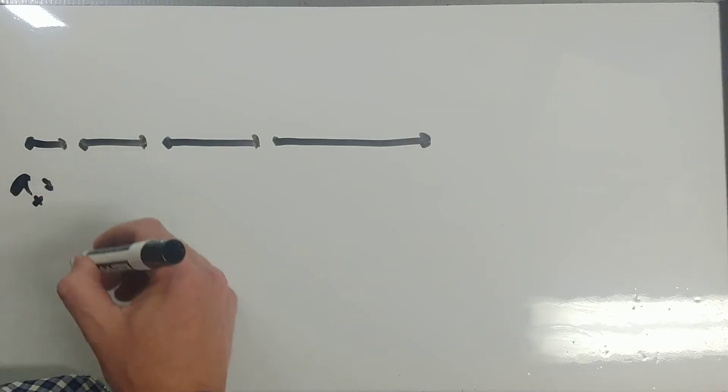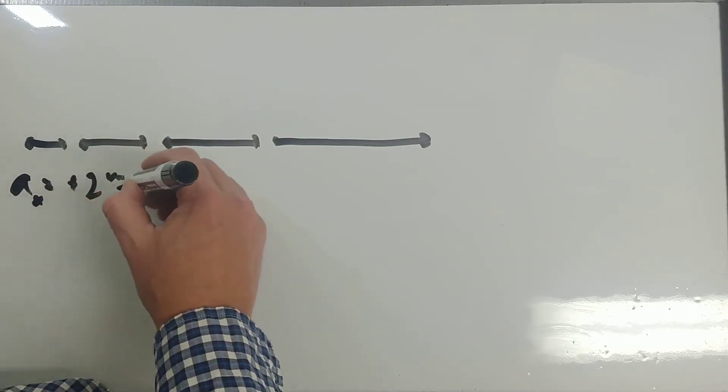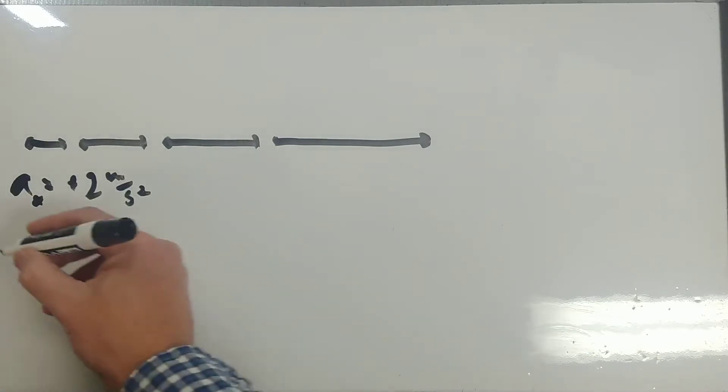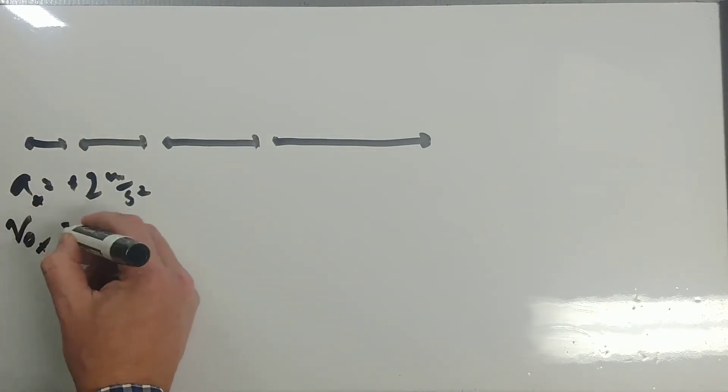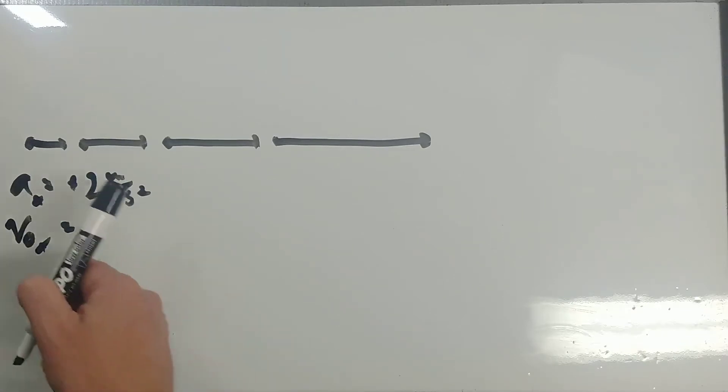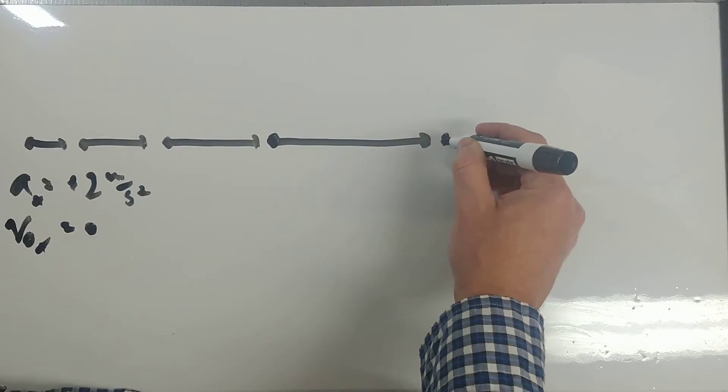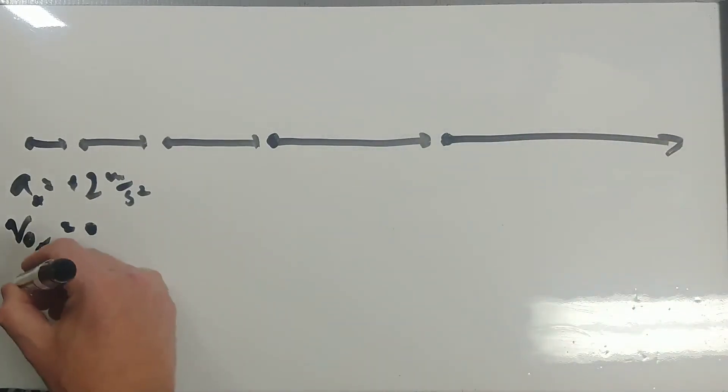Let's say we have something that's speeding up this way, straight line motion. Let's just say its acceleration, ax is positive 2 meters per second squared. Let's say v naught x is zero, and let's make it one, two, three, four seconds of motion. t is 4 seconds.